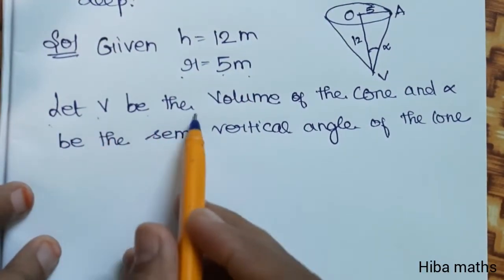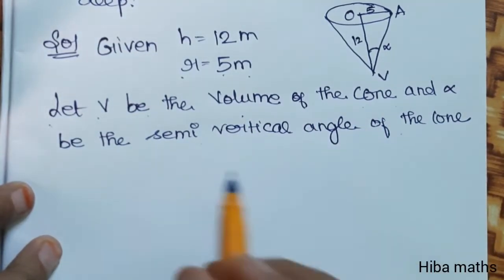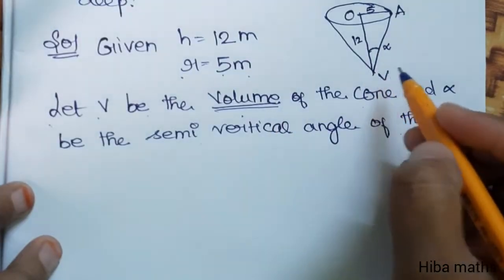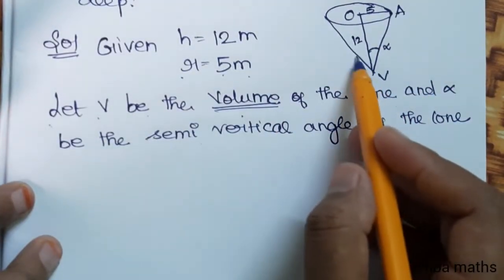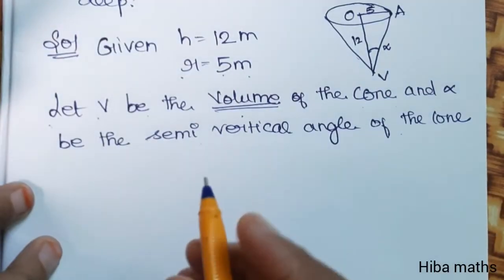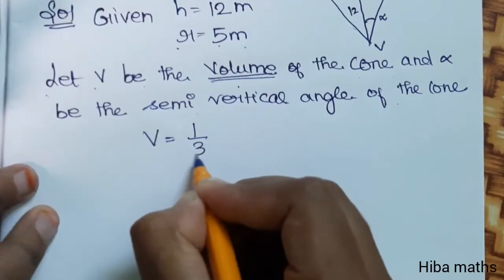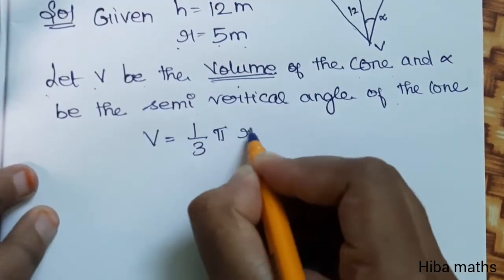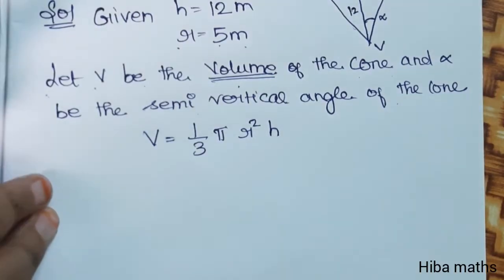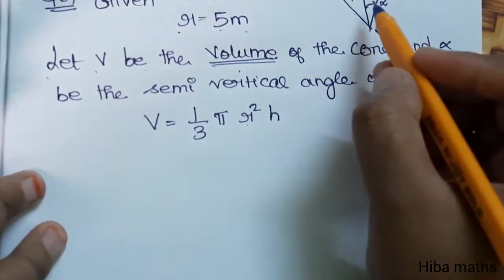Let V be the volume of the cone and alpha be the semi-vertical angle of the cone. The height at the given condition is 8 meters. We will use the volume of the cone formula: Volume of the cone is (1/3)πr²h. We will substitute using the diagram.